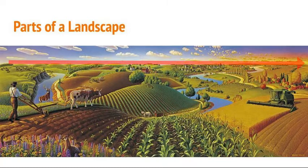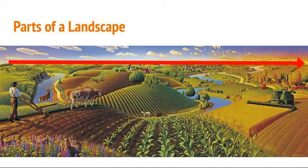This red line is going to represent the horizon. The horizon is important because it's going to tell you where to put things regarding the foreground, middle ground, and the background.